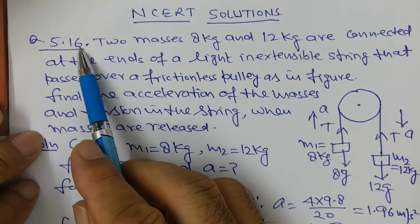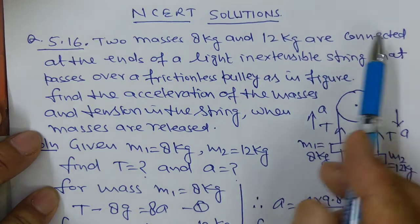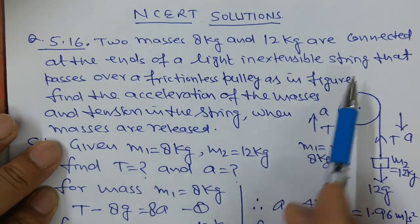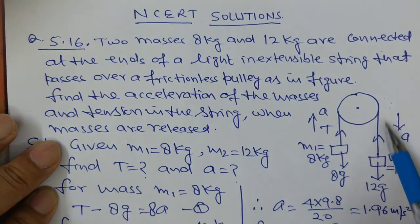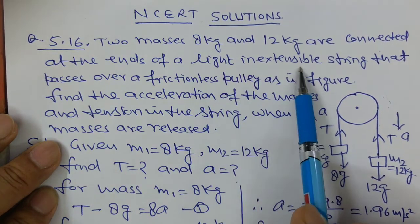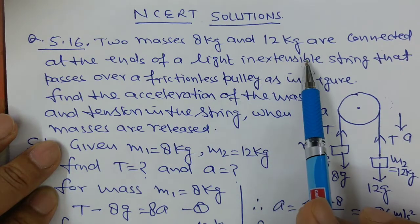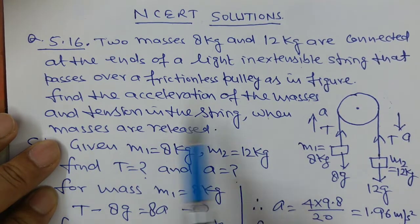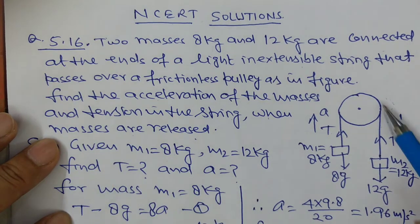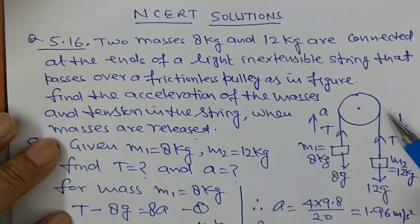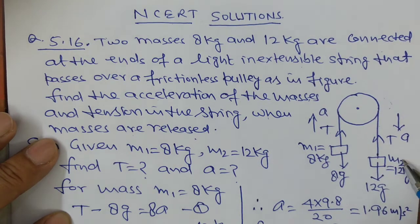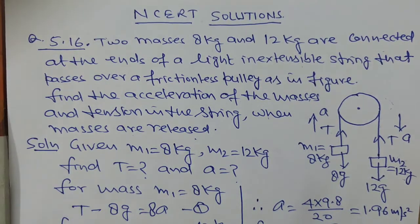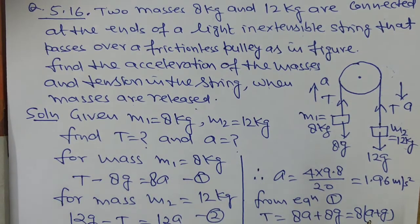Now question number 5.16: Two masses 8 kg and 12 kg are connected at the ends of a light inextensible string that passes over a frictionless pulley. 'Light and inextensible' means the string has no mass and its length does not increase when pulled. Find the acceleration of the masses and the tension in the string when the masses are released.